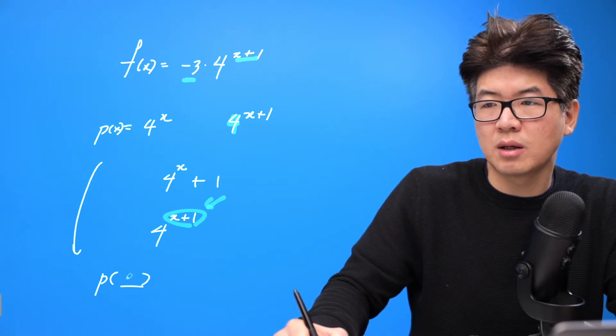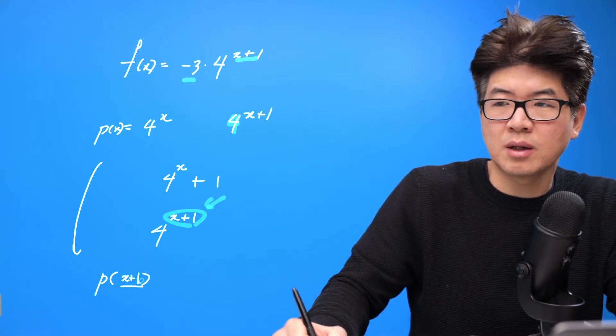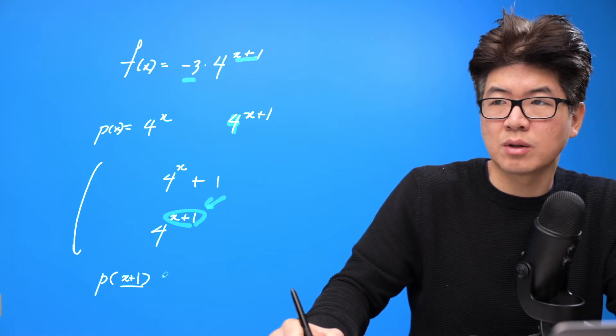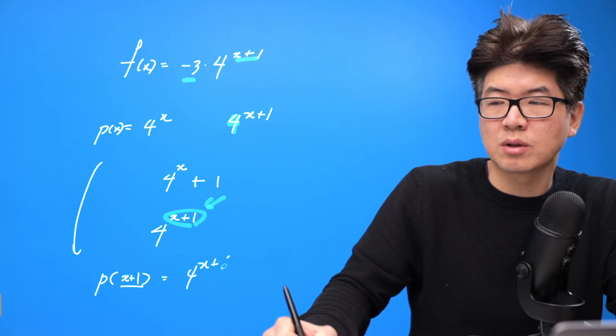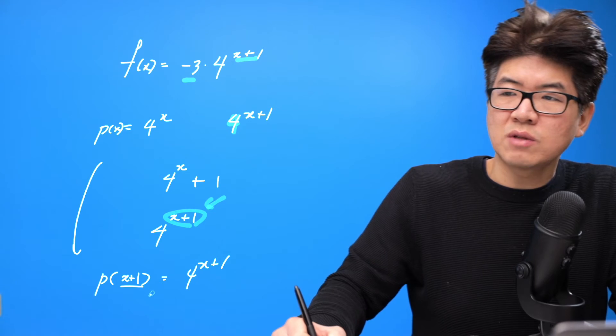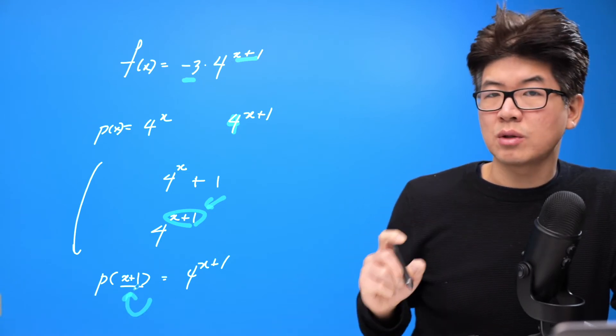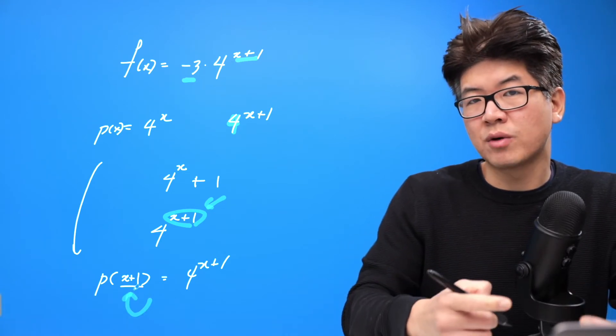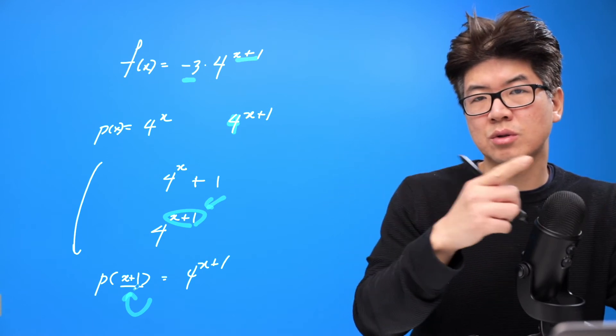let's let it be x plus one, and then we get four to the power of x plus one. So if the transformation is something that we're doing to x before the main parent function, it's horizontal transformation.